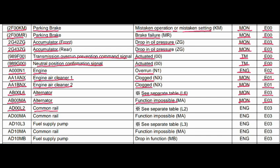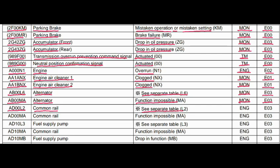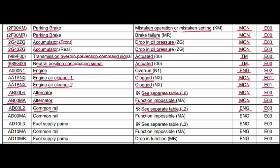Code AD00L2. Where is the problem? Common rail. What is the problem? See separate table L2. L2 means fuel pressure is higher than maximum set pressure.